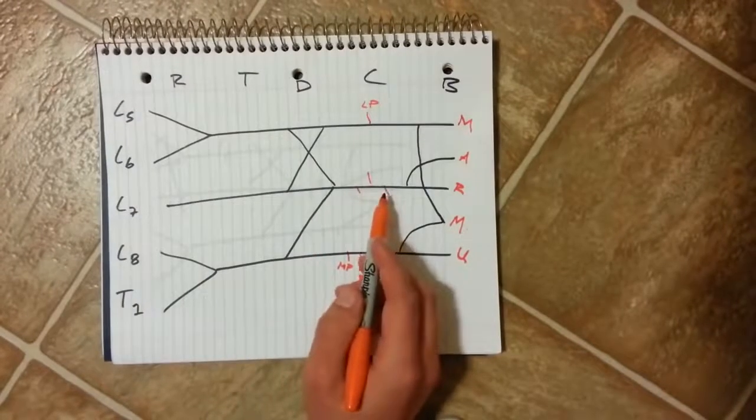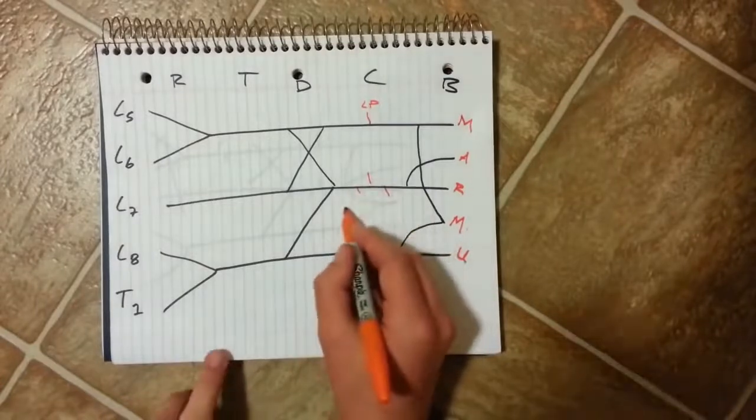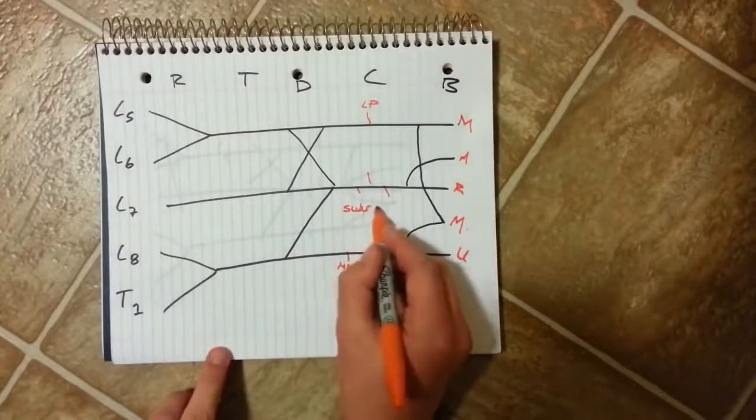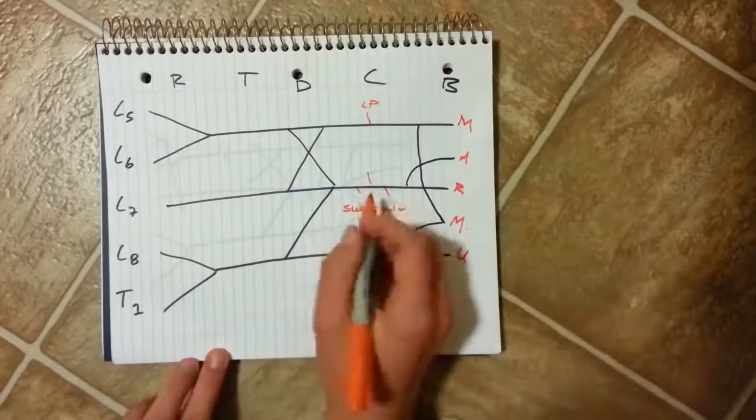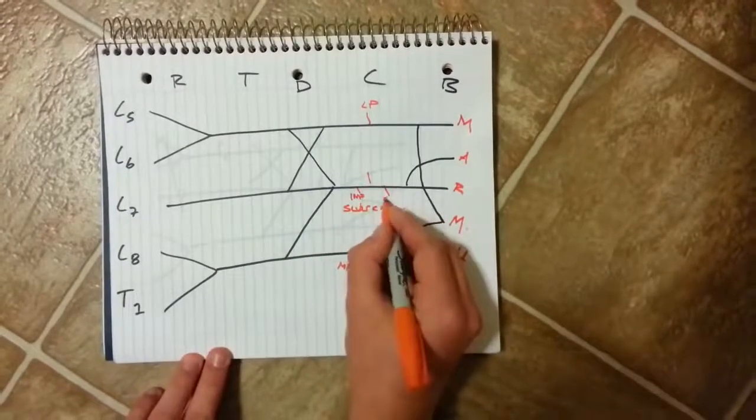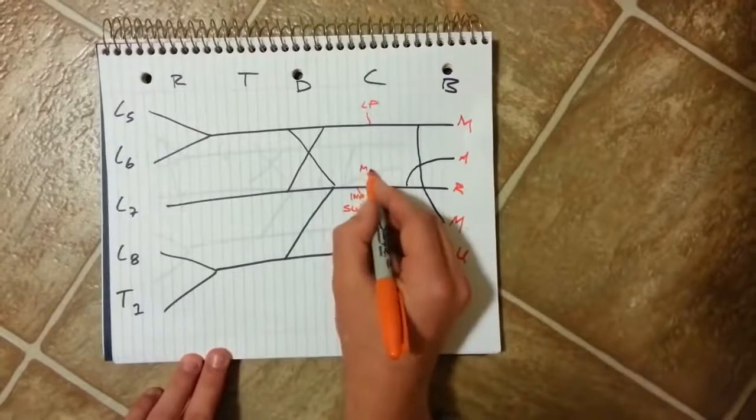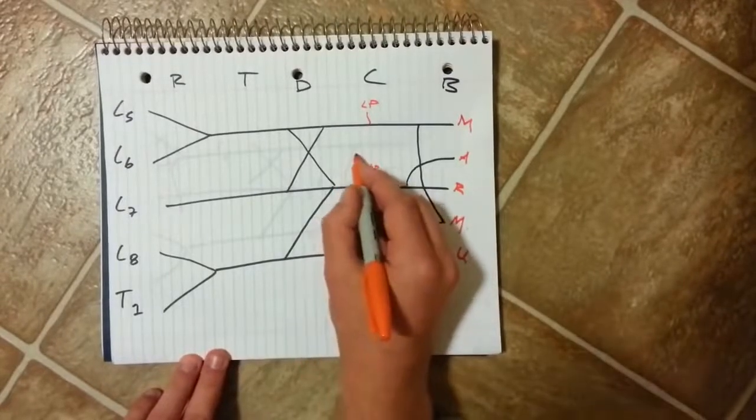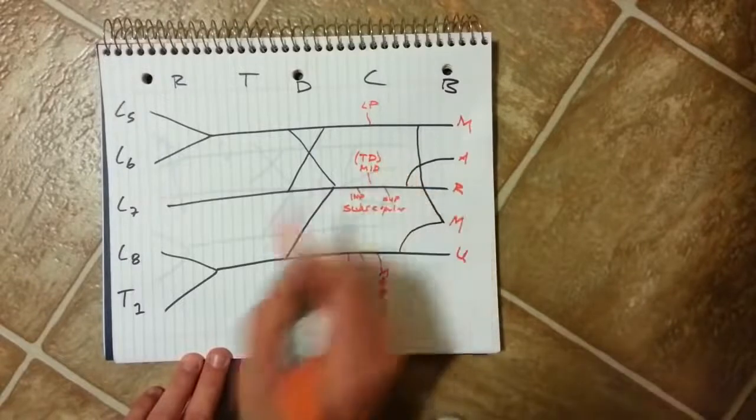These middle ones here are all subscapular nerves. And you have the inferior and the superior and the middle. And the middle subscapular nerve is also known as the thoracodorsal nerve.